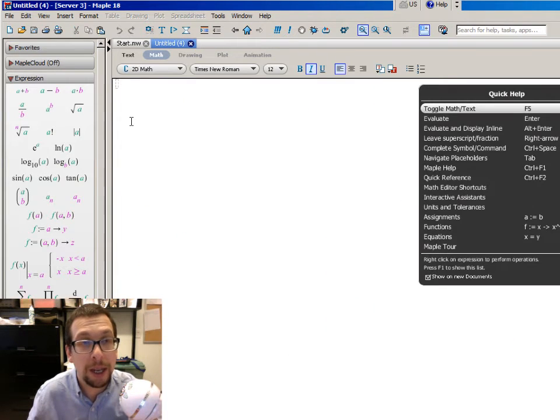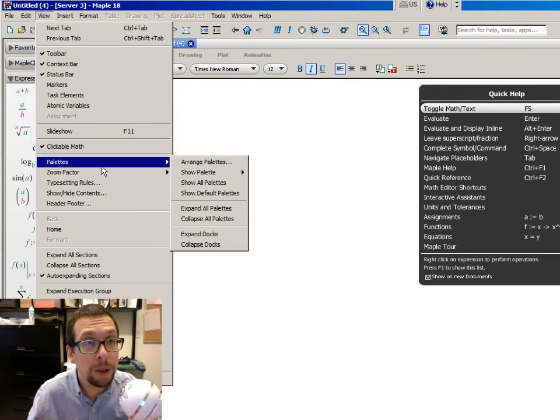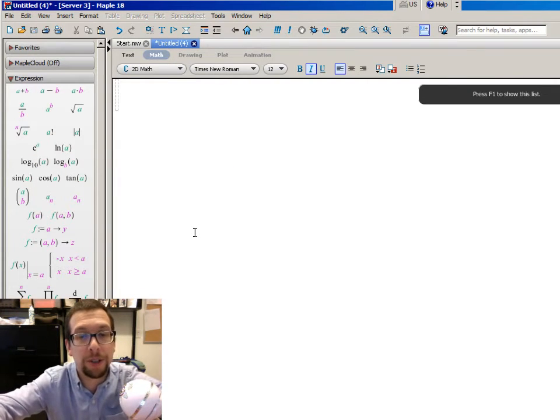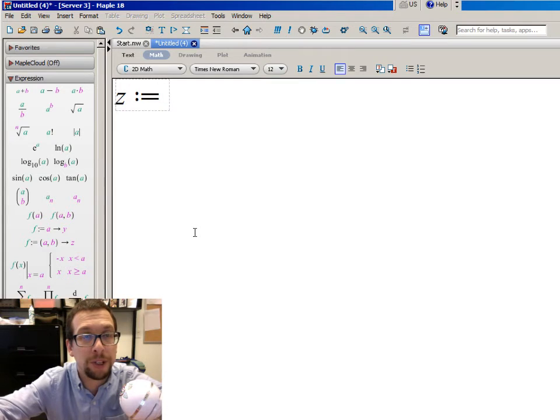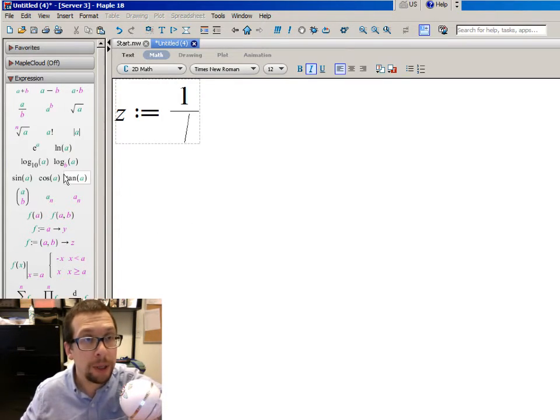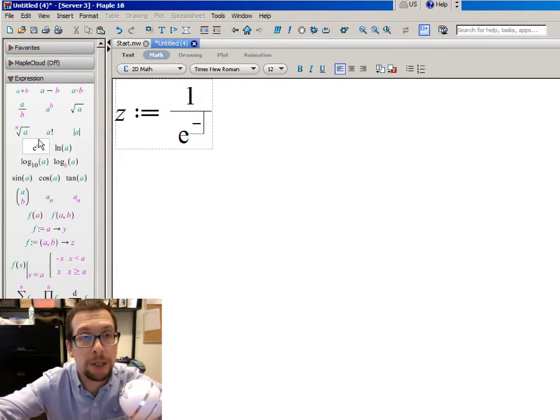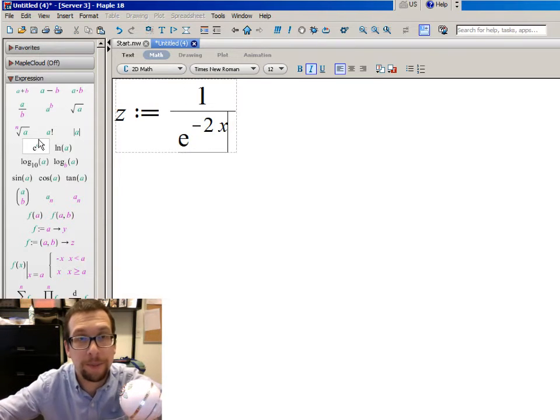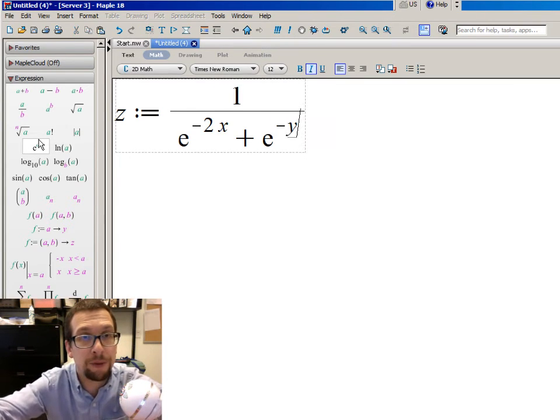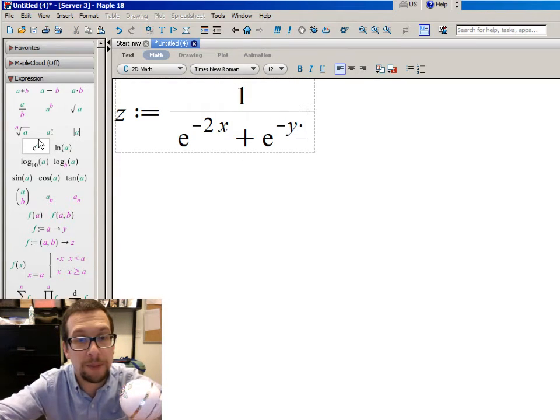I hit New Document, and then I go View, Zoom, 300%, and I type in an equation like this. An equation function z is colon equals sign 1 over e to the negative 2x plus e to the negative y times 3.